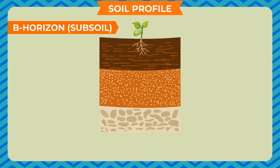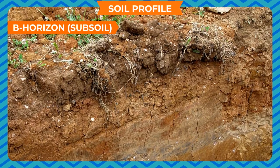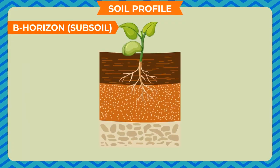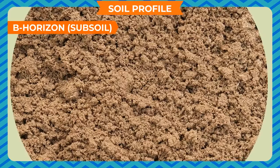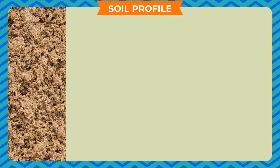B-horizon, Subsoil: Being the second layer from the top, it is relatively harder and compact. It is generally light red or grain color. It largely contains stone and sand particles that make it unfit for plants. The organic matter is less, making it less fertile.